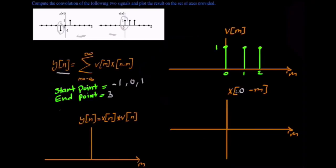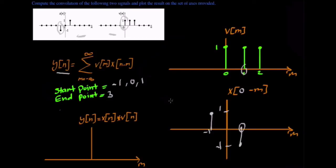The next point is zero. So x of negative m — the new points will be at negative one with an amplitude of one, and at one with an amplitude of negative one. We see if there is an overlap; the only overlap we see is at one. We multiply both amplitudes together to get y of n, which in this case equals negative one.